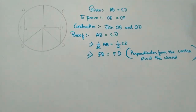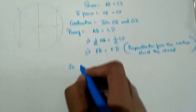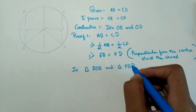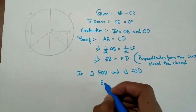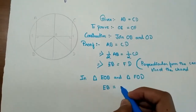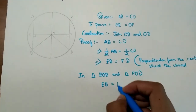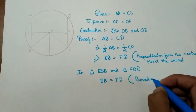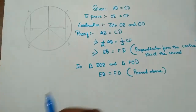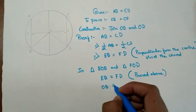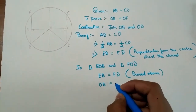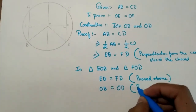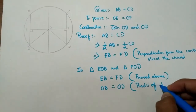Now I will use a congruency condition. In triangle EOB and triangle FOD: first, EB is equal to FD (proved above). Second, OB is equal to OD, because OB and OD are radii of the same circle.